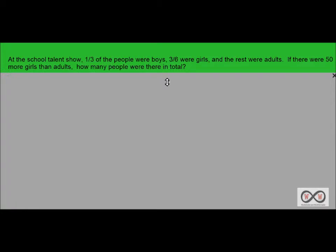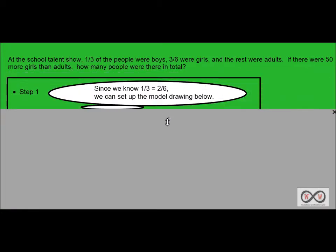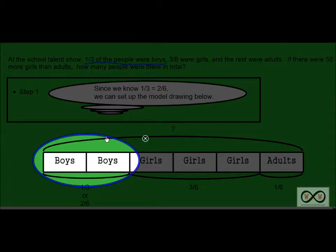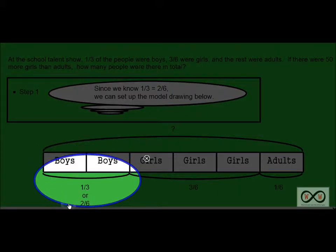We'll be using model drawings — in this case a model drawing involving fractions. We'll go ahead and take a look at the clues and set it up. Since we know that one-third equals two-sixths, we can set up this model drawing. We can see that one-third of the people were boys, and since one-third equals two-sixths, we can set this right up.